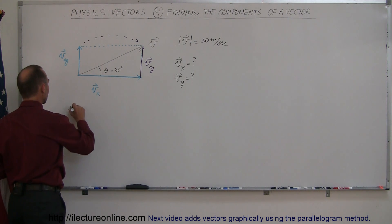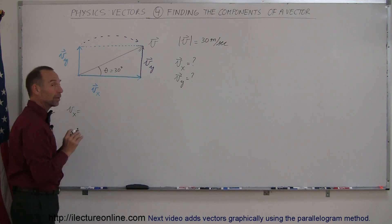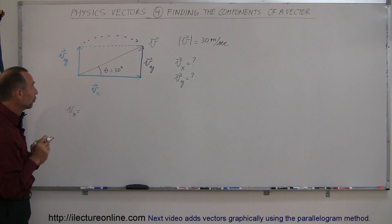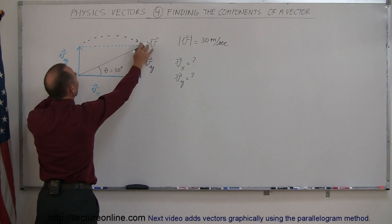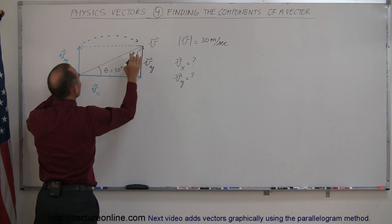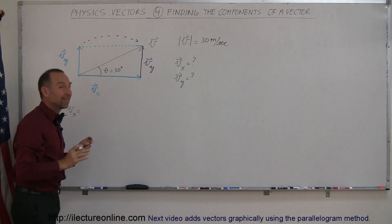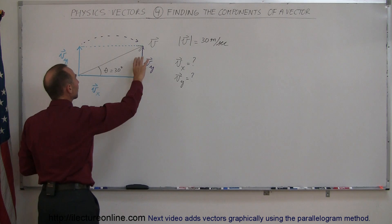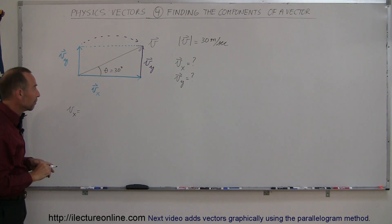So v sub x is equal to, now notice I didn't draw a little arrow on there, so I simply talk about the magnitude only. And notice this triangle right here where the hypotenuse is the magnitude of velocity. The adjacent side to the angle represents the magnitude of the x component and the opposite side to the angle represents the magnitude of the y component.